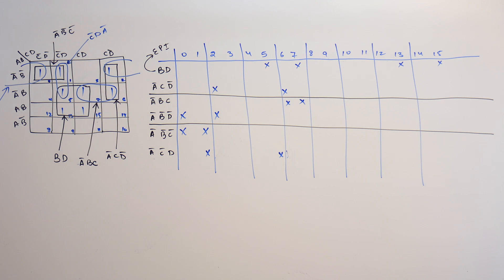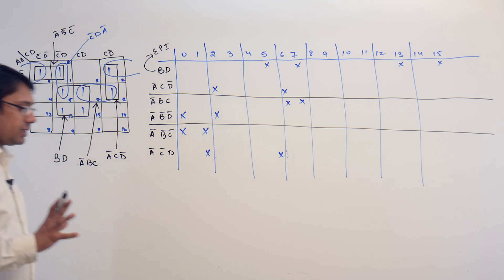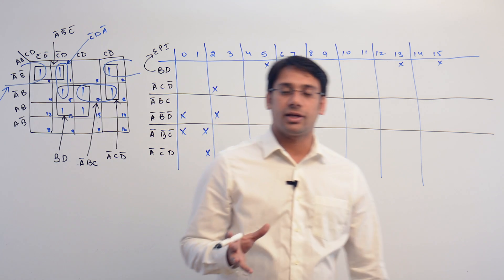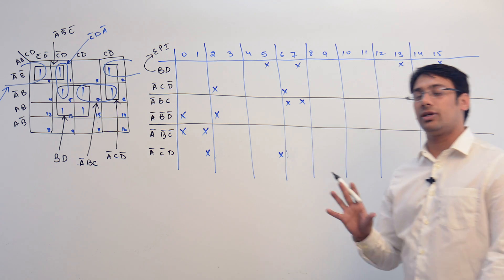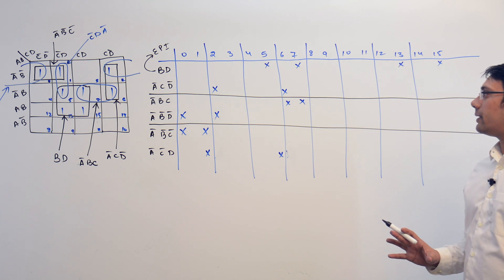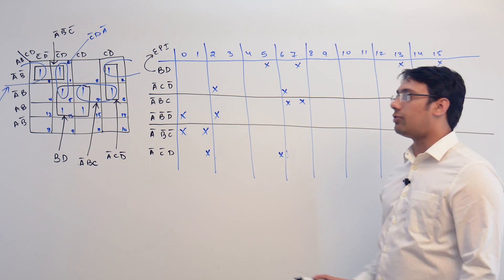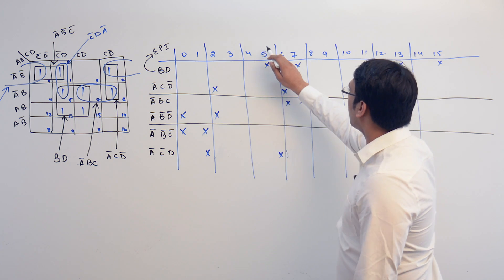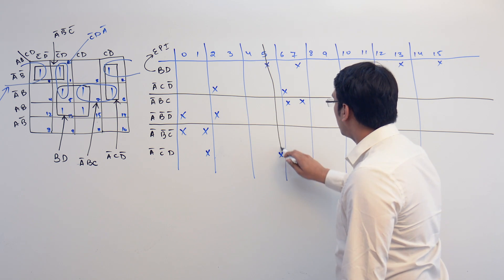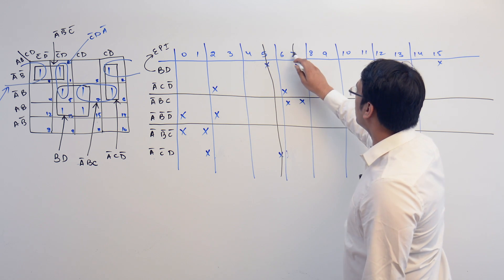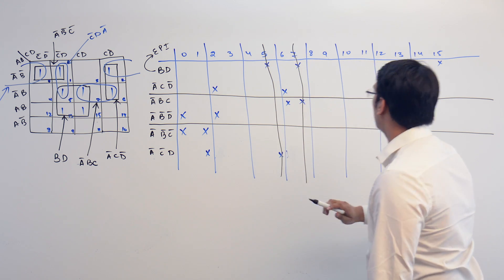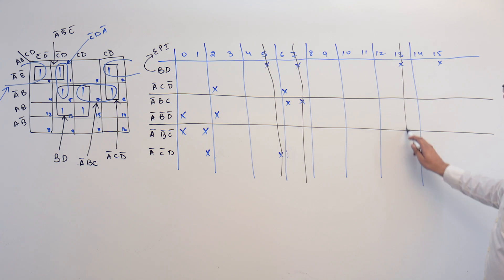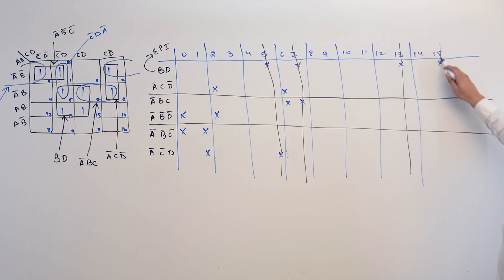Let us identify the different solutions we can have — what prime implicants can be in the solution to make it correct. BD should be there. BD is covering 5, so no one else needs to cover 5. BD is covering 7, so no one else needs to cover 7. BD is covering 13 and 15, so no one else needs to cover those either.